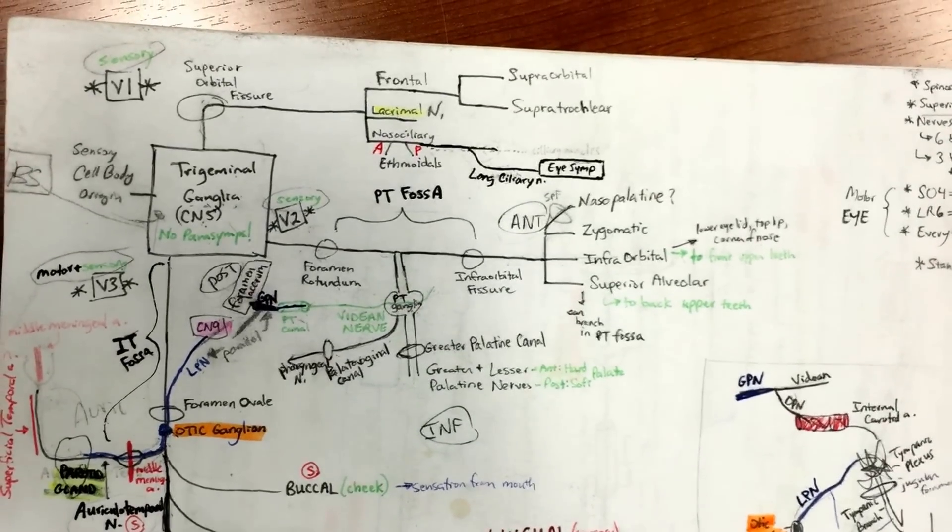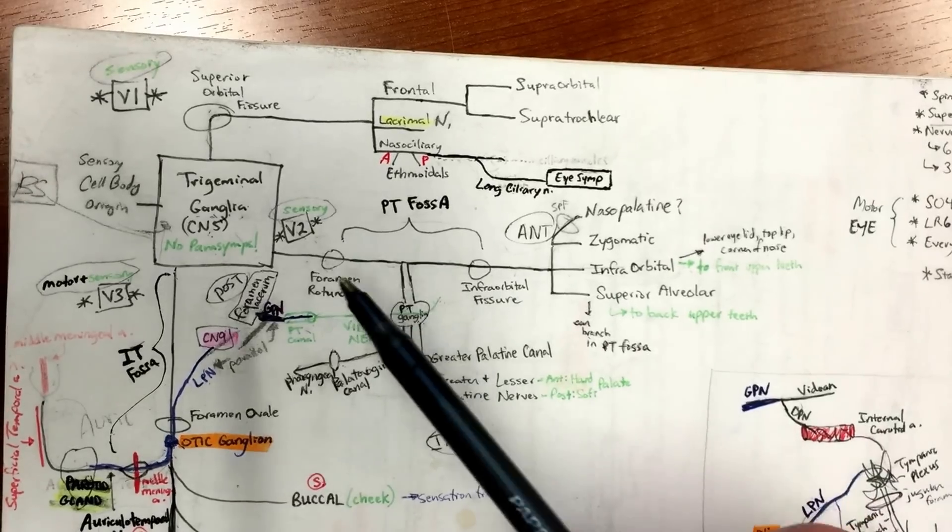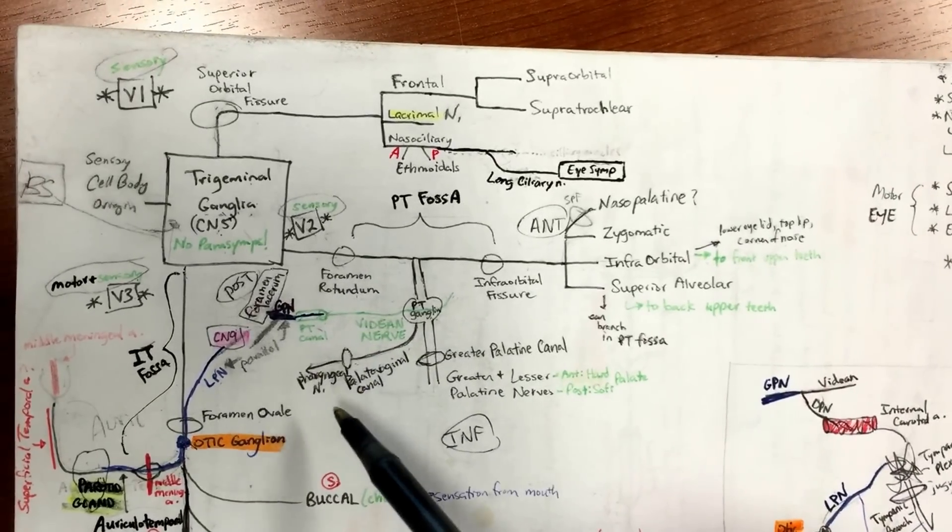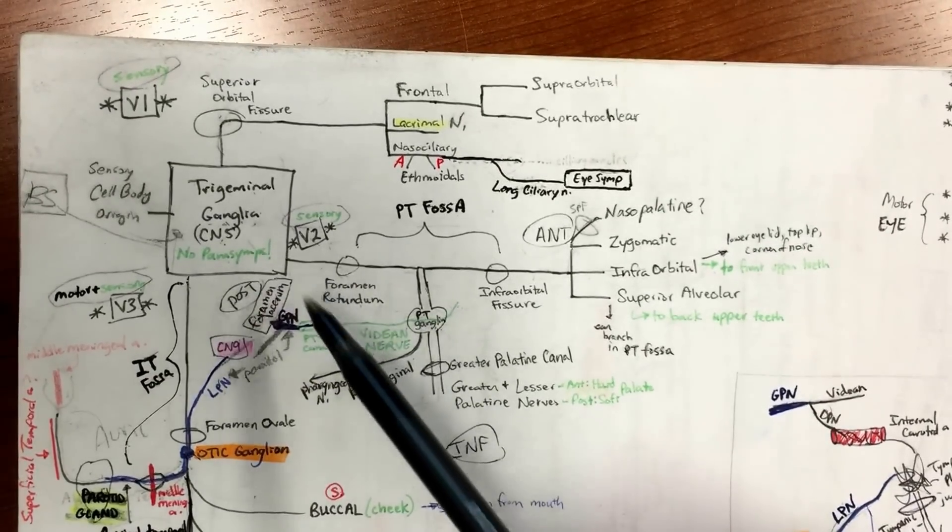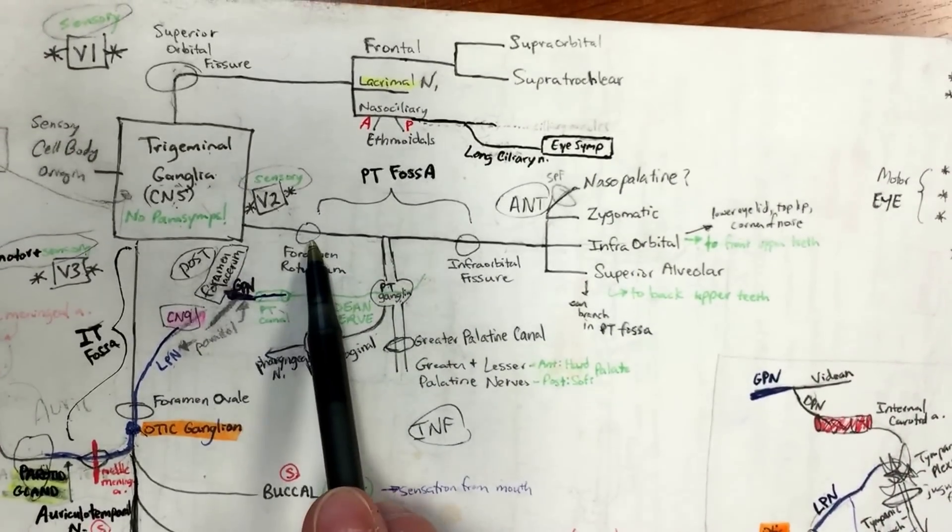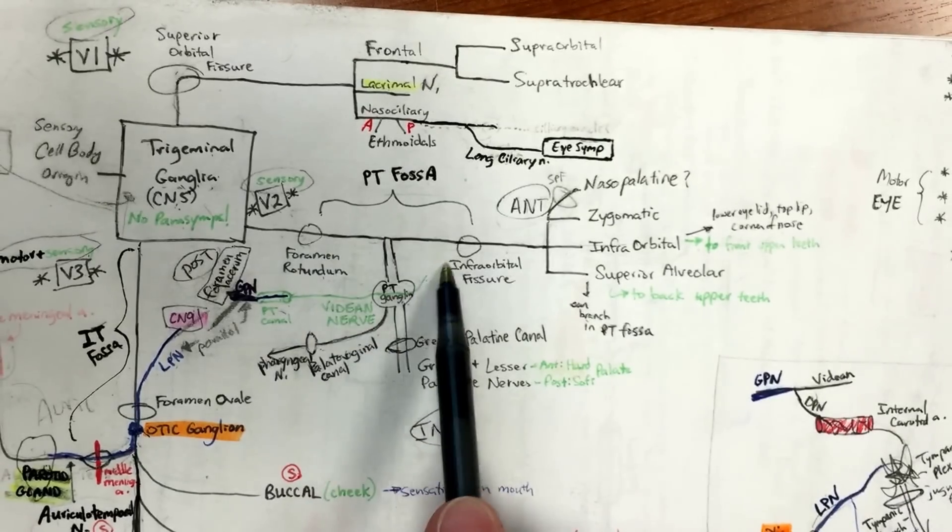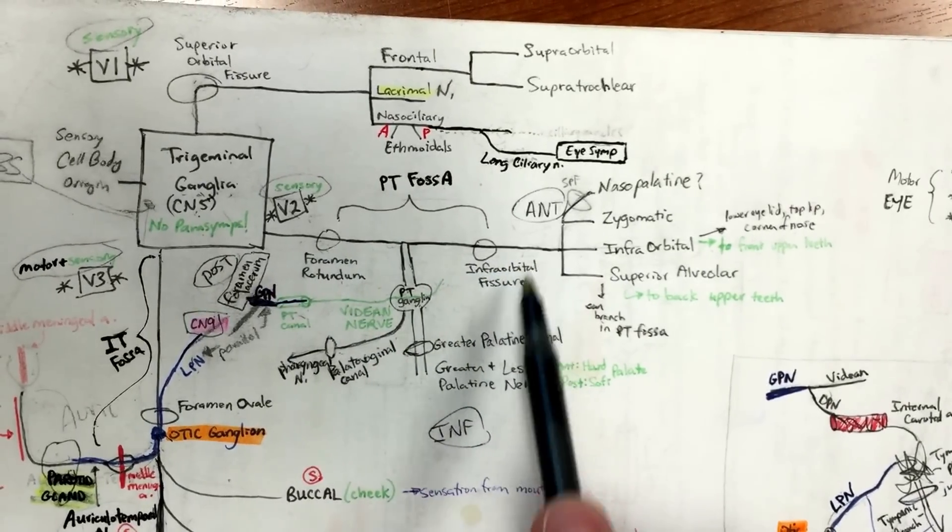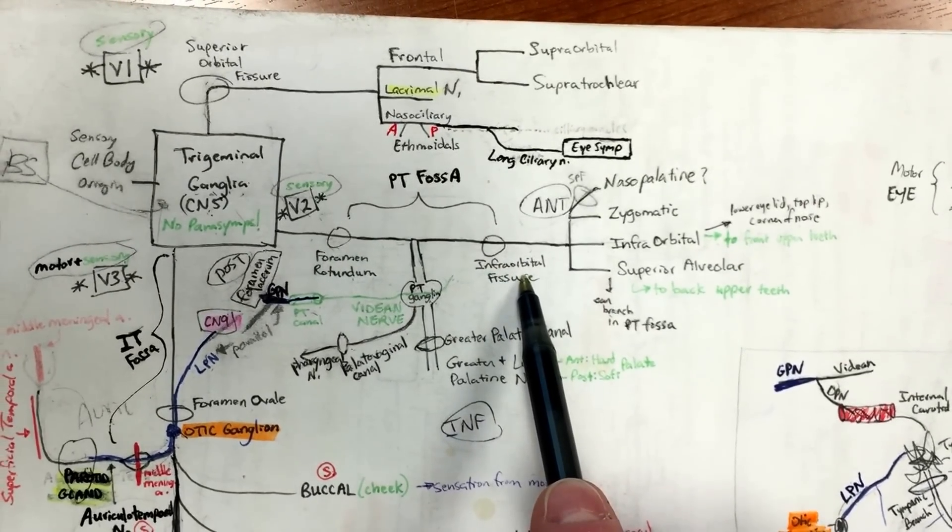Okay, so V2 off trigeminal ganglia. V2 is completely sensory and goes through which foramen when we come out? Foramen rotundum. So it busts through foramen rotundum and then it's gonna go through the infraorbital fissure, so under the eye.